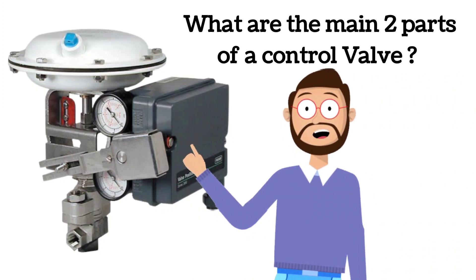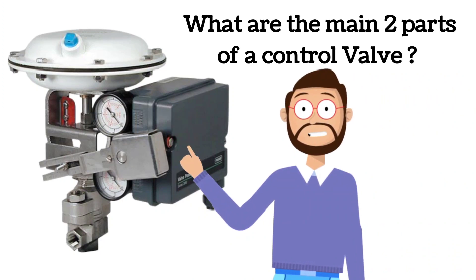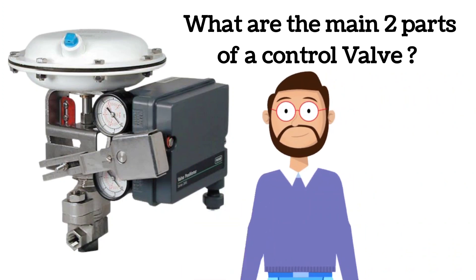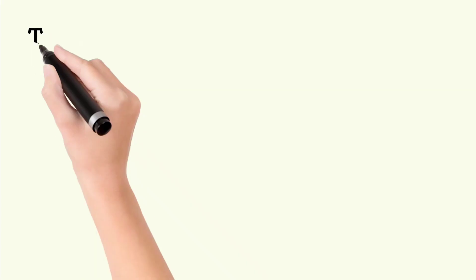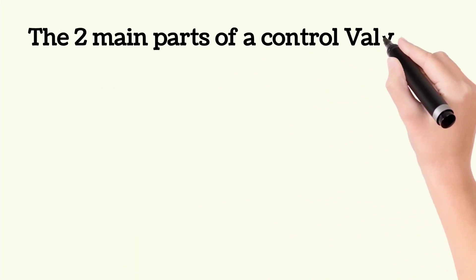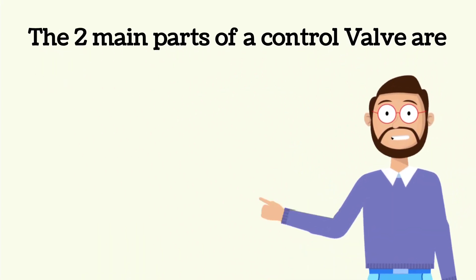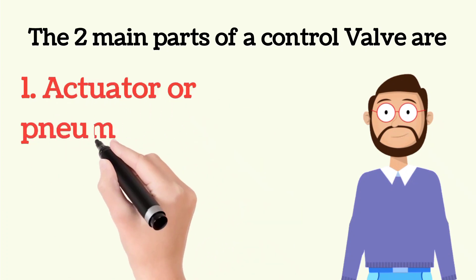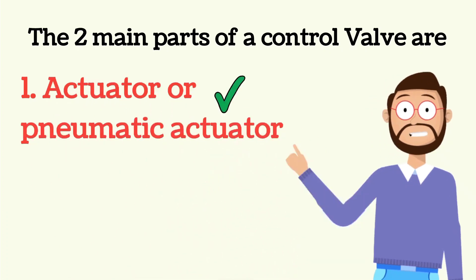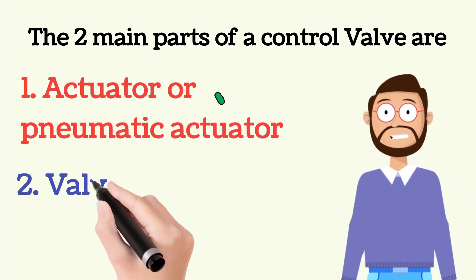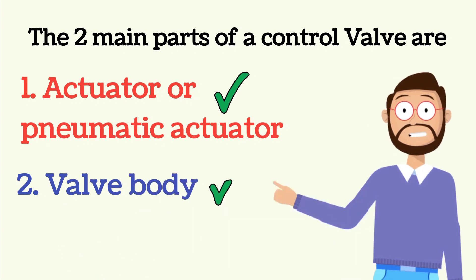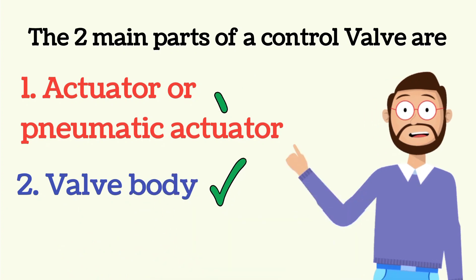Although there are many parts in a control valve, only two parts are main. The first of the two main parts of a control valve is the actuator, or what we also call a pneumatic actuator. The second part is the valve body, or what we also call the body.